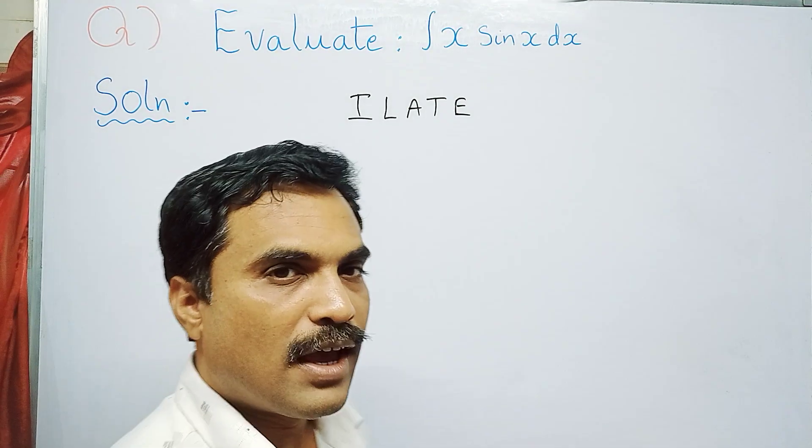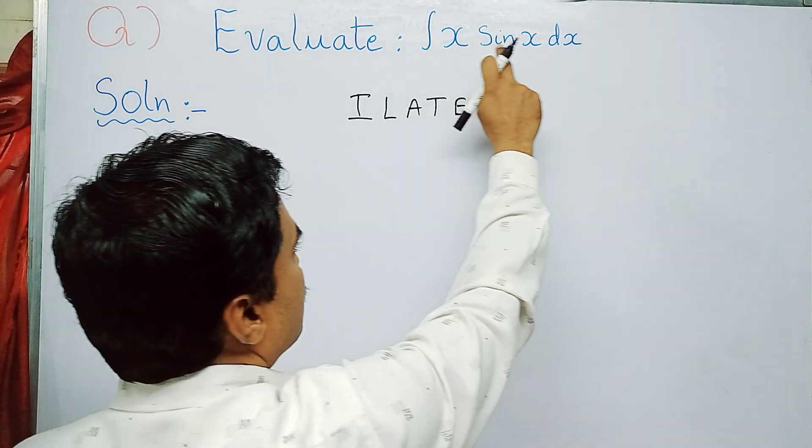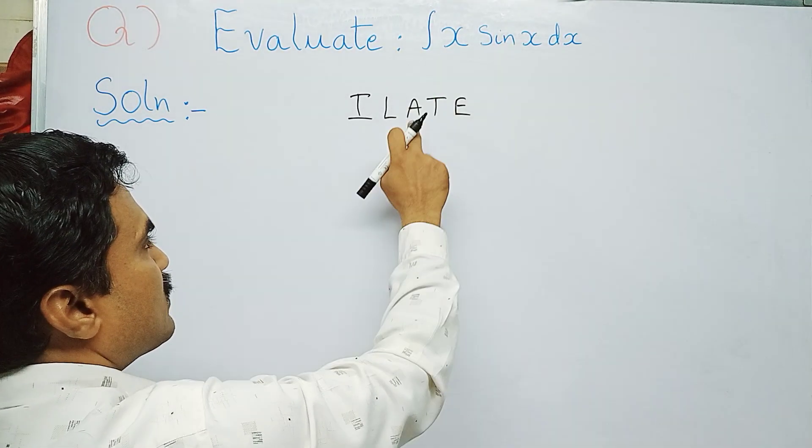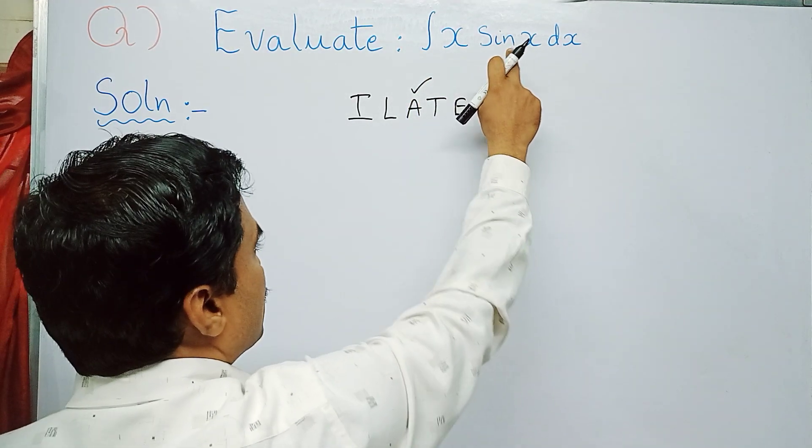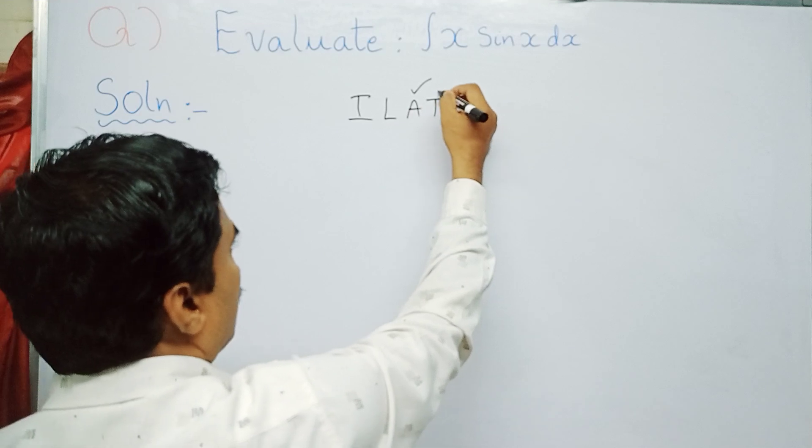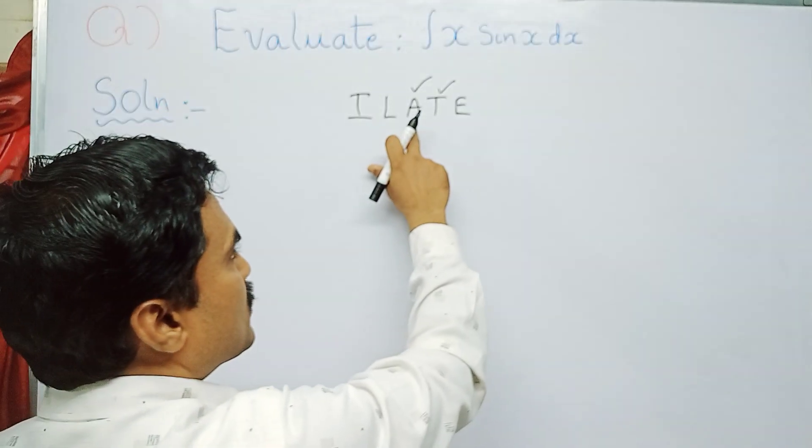If you observe this integral, this is x into sin x dx. Here x is the algebraic function, so put a tick mark at A. And sin x is a trigonometry function, so put a tick mark at T. Since A comes first, we take u as x.